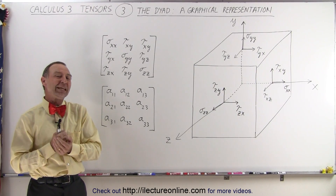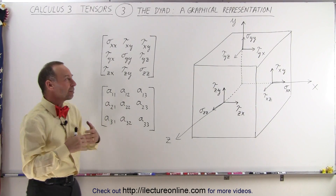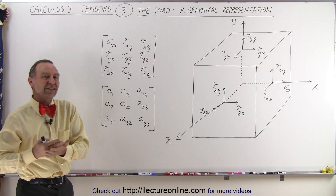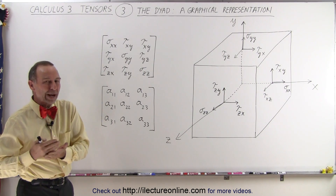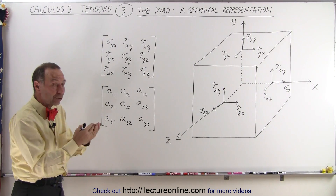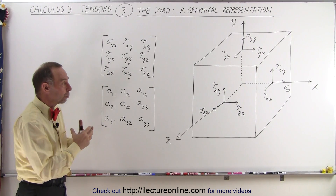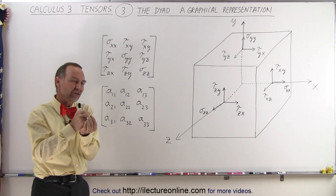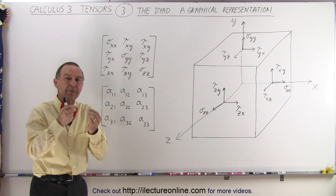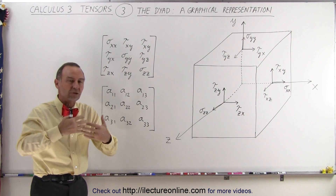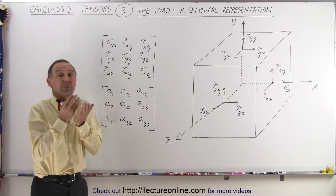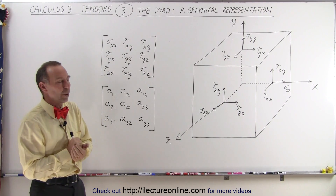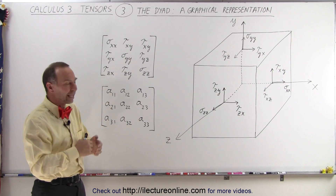Welcome to ElectronLine. Now let's talk about the physical graphical representation of a tensor of rank 2. A tensor of rank 2 has nine components. In other words, for each direction — the x, y, and z direction — there's some phenomenon, some force, some stress, something that needs to be represented in terms of a vector in itself that has three components.